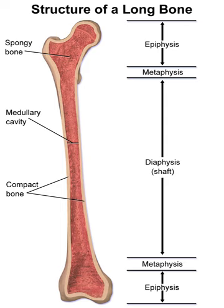At the joint, the epiphysis is covered with articular cartilage. Below that covering is a zone similar to the epiphyseal plate, known as subchondral bone. The epiphysis is filled with red bone marrow, which produces erythrocytes — red blood cells.